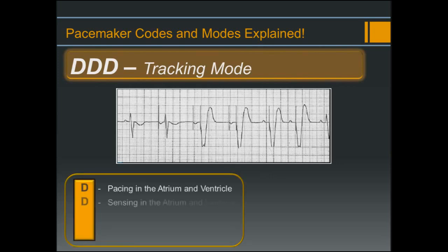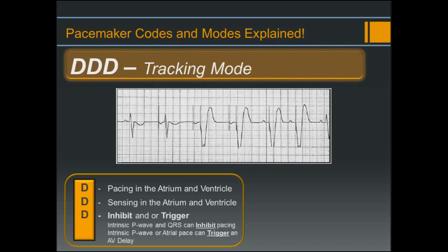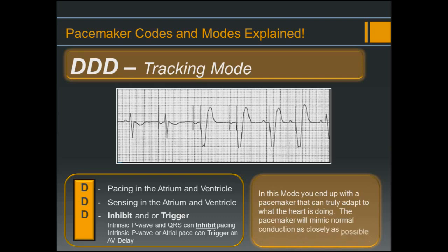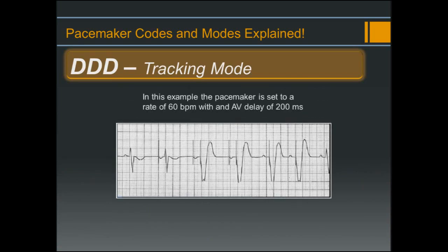In DDD, we are pacing in the atrium and ventricle, sensing in the atrium and ventricle, and the response to sensing will be to inhibit and/or trigger an AV delay. An intrinsic P-wave or QRS can inhibit pacing in its respective chamber, and an intrinsic P-wave or atrial pace can also trigger an AV delay. In this mode you end up with a pacemaker that can truly adapt to what the heart is doing — mimicking normal conduction as closely as possible. In this example, the pacemaker is set to 60 beats per minute with an AV delay of 200 milliseconds.